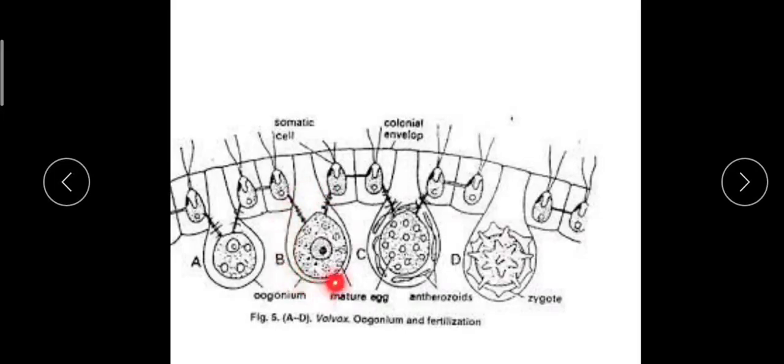The gonidial cell enlarges in size, loses its flagella, and its chloroplast and nucleus become enlarged. The complete protoplast of the oogonium transforms into the female gamete, called the egg or oosphere. The egg has a receptive spot which receives the male gamete.